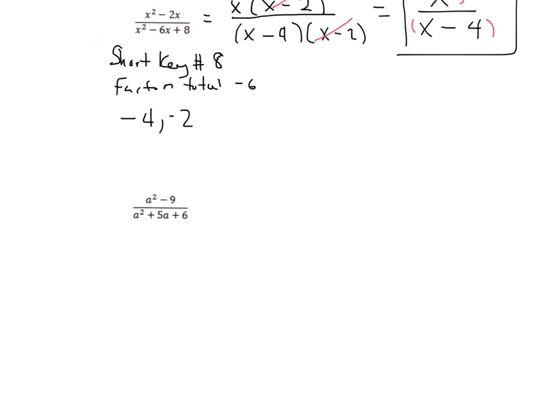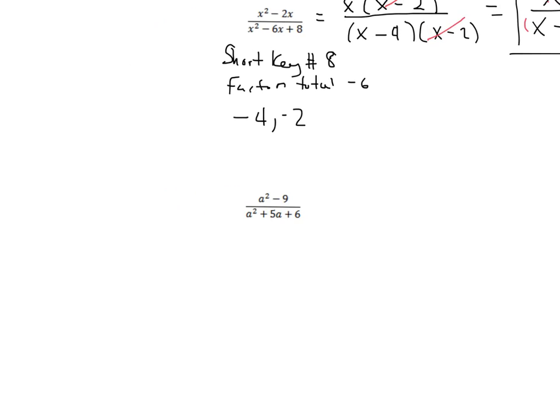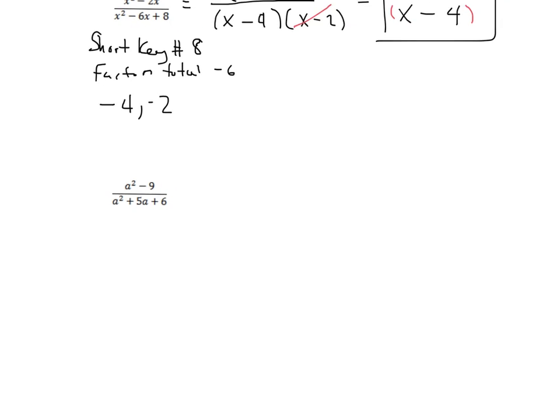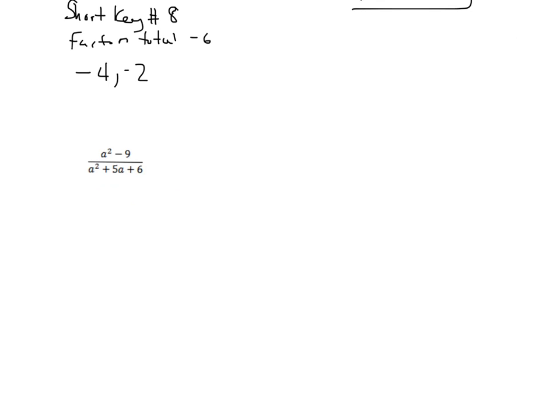Let's take a look at another one of these. So in this one, we are going to, again, factor the numerator. So let's take a look at the numerator. On the top, we have a squared minus 9. We know that's a difference of squares, right? a squared minus 9 factors into a plus 3 and a minus 3.